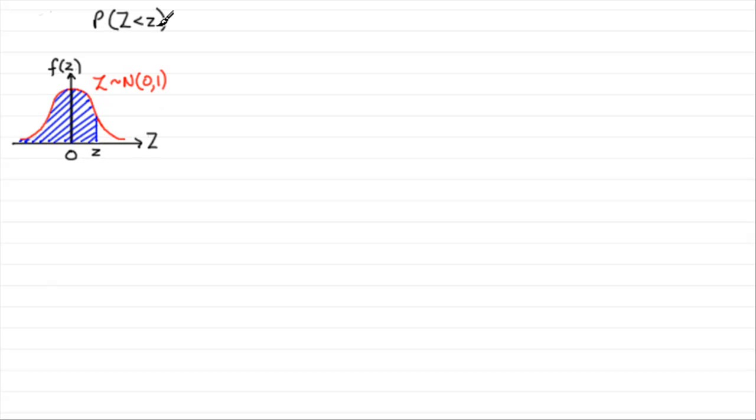And this probability is denoted by a function like this, phi of z. Now you might be able to use a calculator that works out phi of z, the probability of being less than any particular value of z.